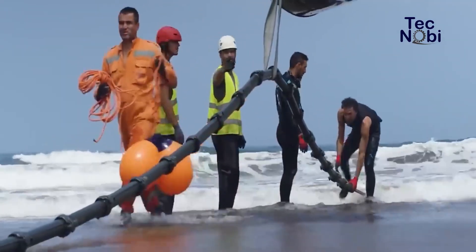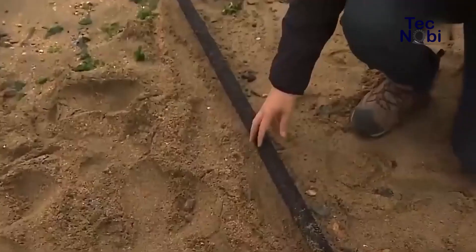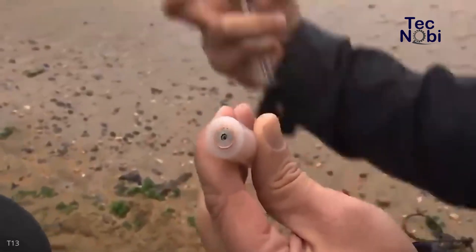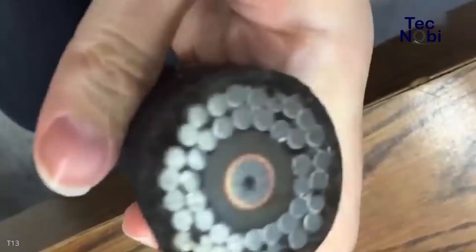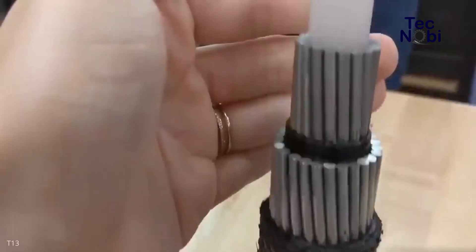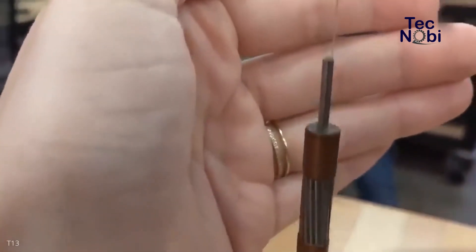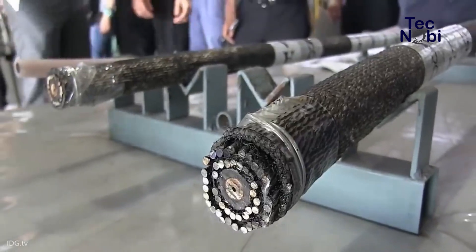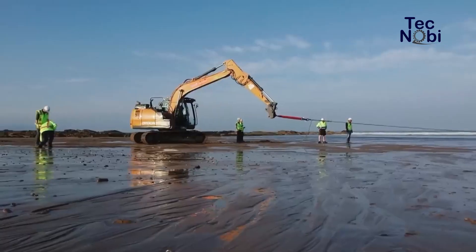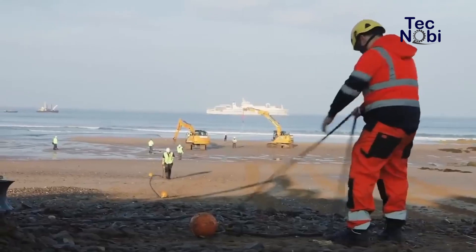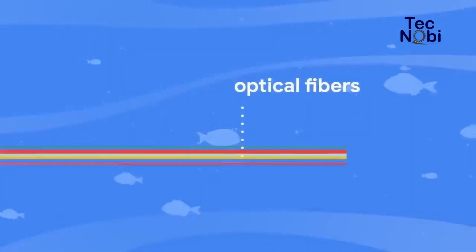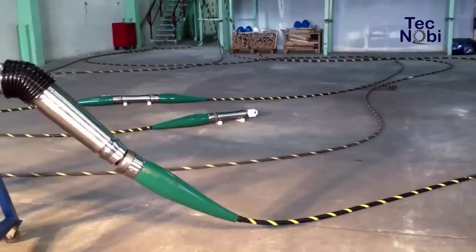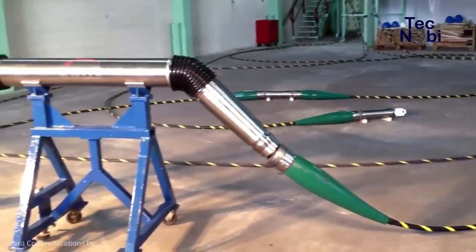Fiber optic cable installed below the sea has a thickness of between 7 and 10 centimeters. Although such cables have a large diameter, the core of the fiber optic cable is very small — the thick sections are the wrapping layers. The fiber is covered with a steel rope, which serves to protect the core from external damage such as earthquakes and sea water pressure. In addition, the fiber optic cable is also protected with copper.